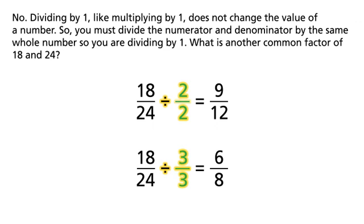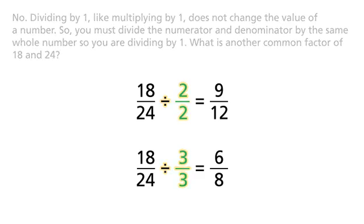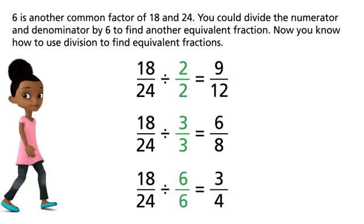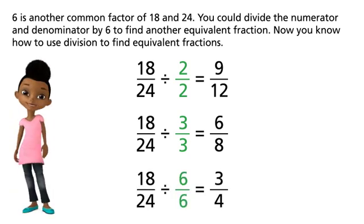What is another common factor of 18 and 24? 6 is another common factor of 18 and 24. You could divide the numerator and denominator by 6 to find another equivalent fraction.